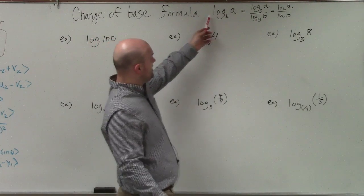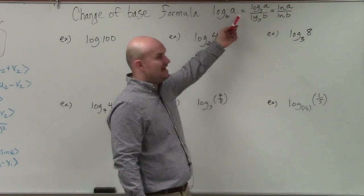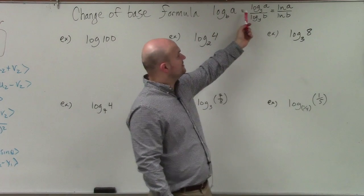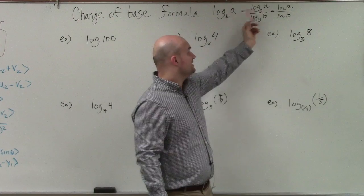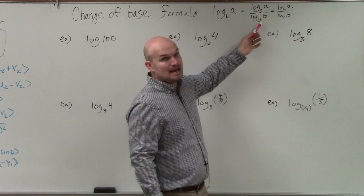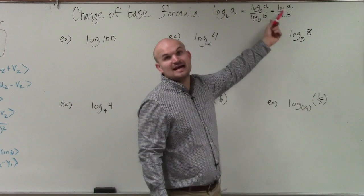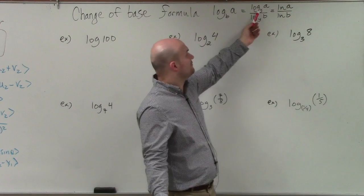So basically the change of base formula is if you have a logarithm base b of a, then we can take the logarithm of any base y of a and divide it by a log of that same base of b. Or we could do the natural log, which would obviously, therefore then, if you did the natural log, then y would equal e, right?